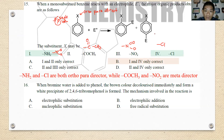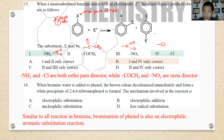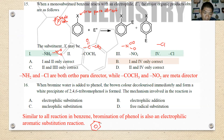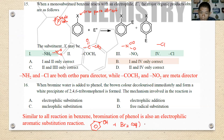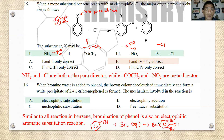Number sixteen: when bromine is added to phenol, the brown colour decolorizes immediately and a white precipitate of 2,4,6-tribromophenol forms. Phenol reacts with bromine water, quickly forming 2,4,6-tribromophenol where bromine occupies positions 2, 4, and 6. This is an electrophilic aromatic substitution reaction. The best answer is A.